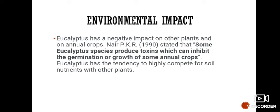Environmental impact of eucalyptus oil: Eucalyptus oil has a negative impact on other plants and on annual crops. Some eucalyptus species produce toxins which can inhibit the germination or growth of some annual crops. Eucalyptus oil also has a tendency to highly compete for soil nutrients with other plants. Thank you.